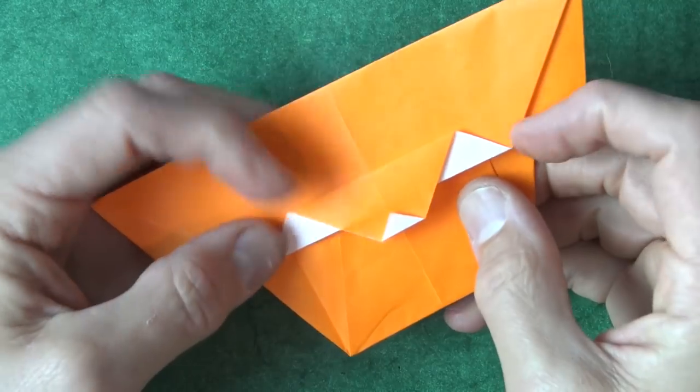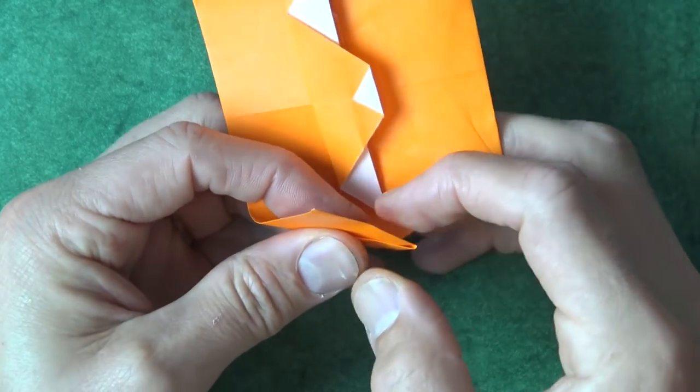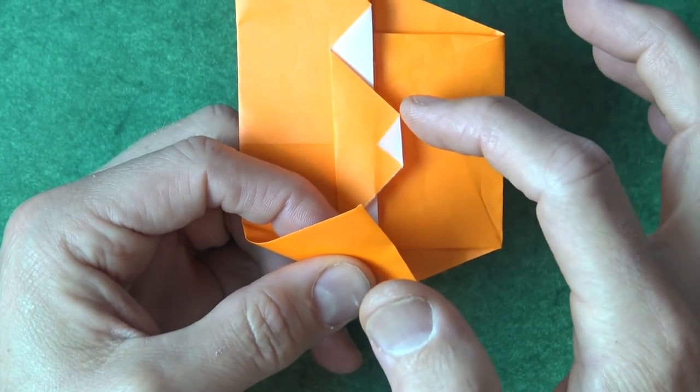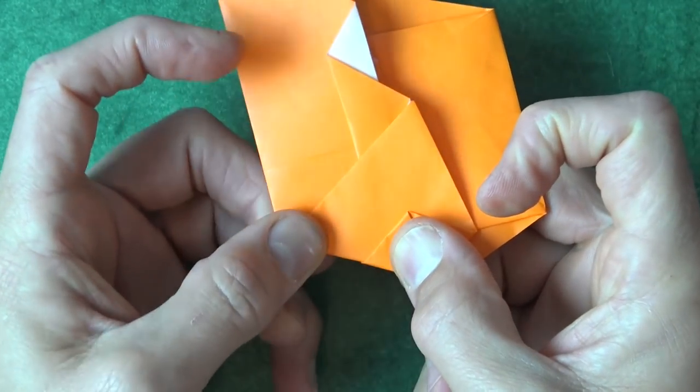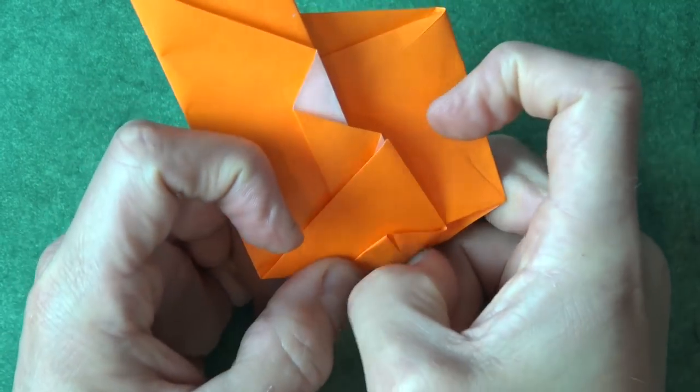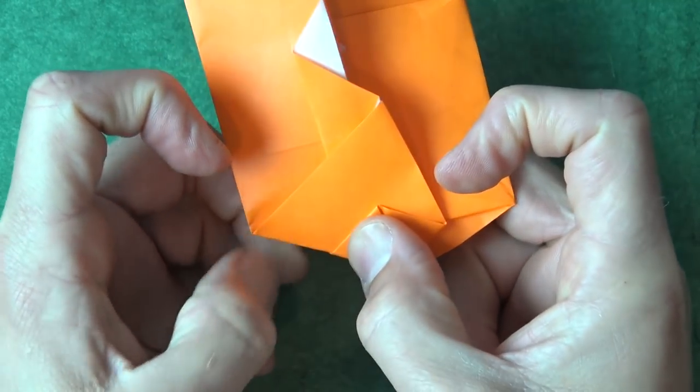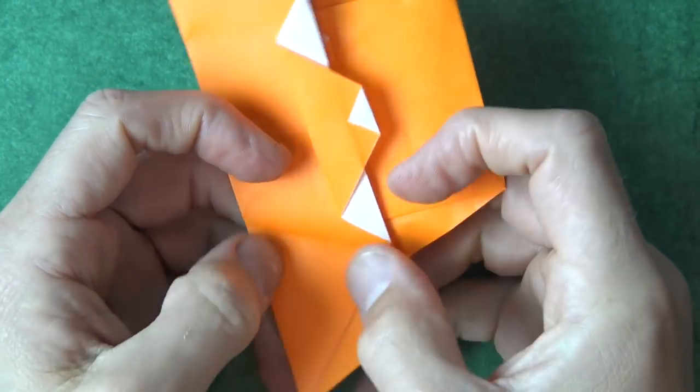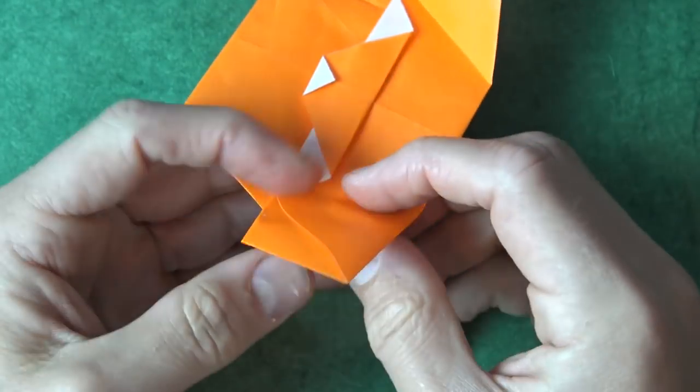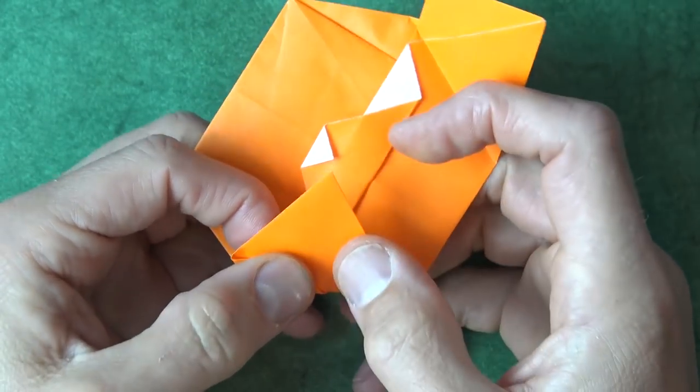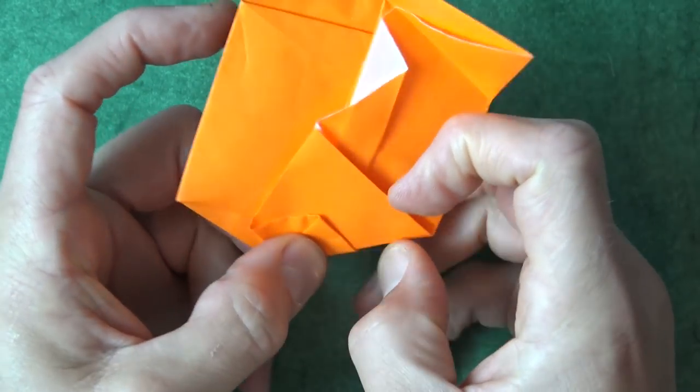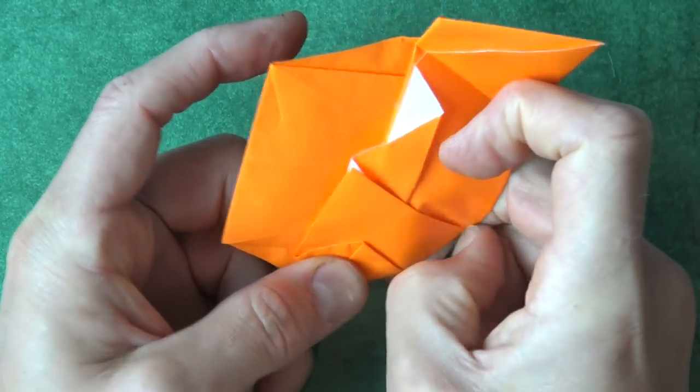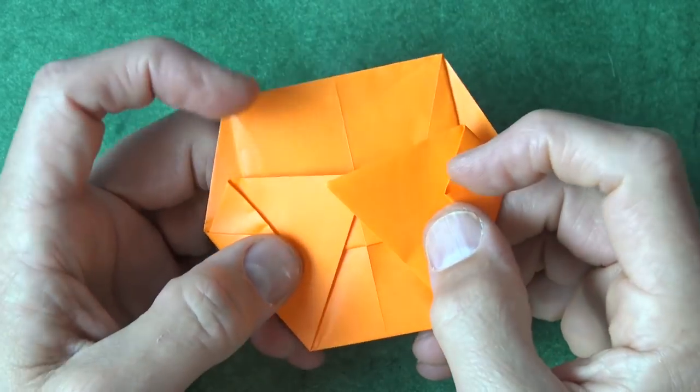And now fold this flap up right so that it's even with the bottom of the eyes. Like that. And now rotate and fold this flap up so that this corner touches this point. And unfold and repeat on this side so that it touches this point. And refold this flap.